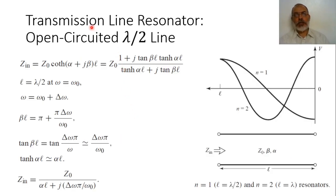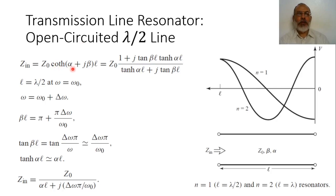Another example of a transmission line resonator is the open-circuited lambda-over-2 transmission line. For an open-circuit transmission line, the input impedance uses cotanh instead of tanh, so Zin = Z₀ · coth(αl + jβl). When the length is around lambda-over-2, the value of βl is nearly π. This cotanh can be simplified as Z₀ × (1 + j·tan(βl)·tanh(αl)) / (tanh(αl) + j·tan(βl)).